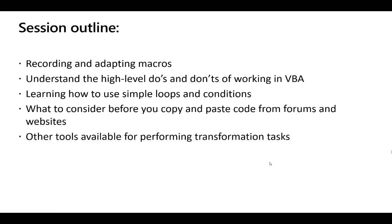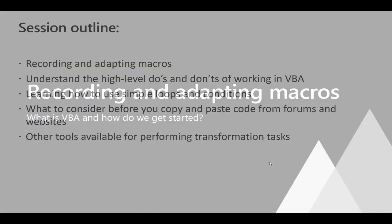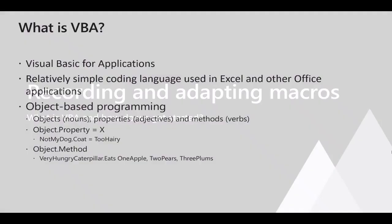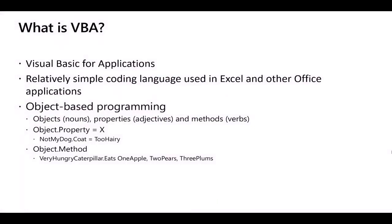Let's start talking about what VBA is and how to get started. VBA stands for Visual Basic for Applications. It's a relatively simple coding language used in Excel and other Office applications. It's object-based programming: you've got objects (nouns), properties (adjectives), and methods (verbs — doing actions).